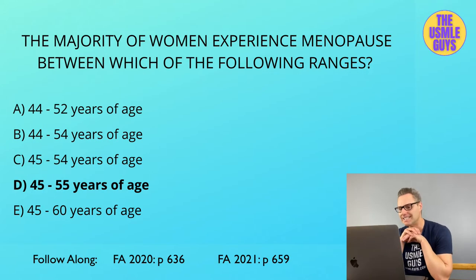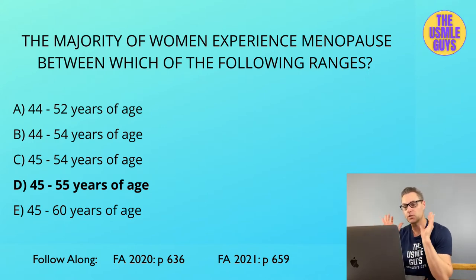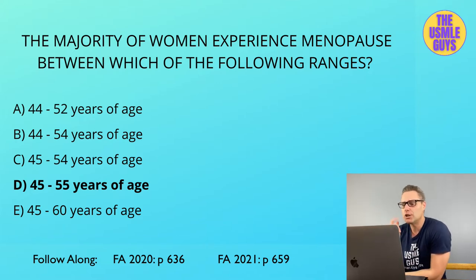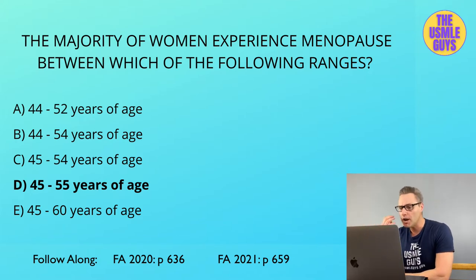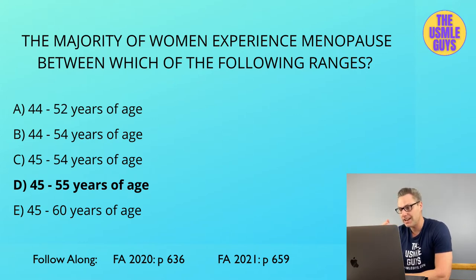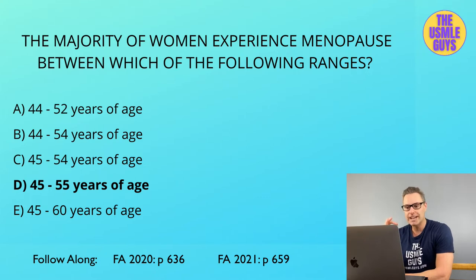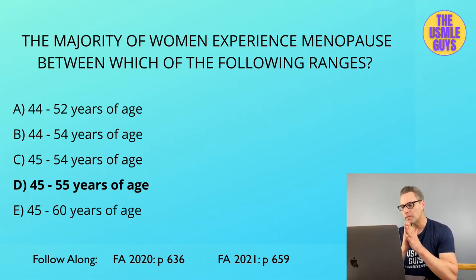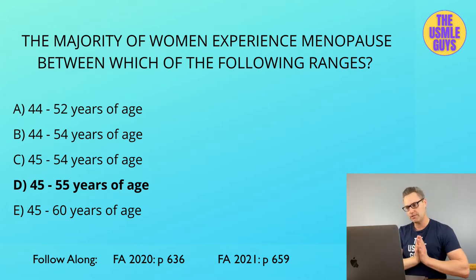The correct answer here is D, 45 to 55 years of age. So let's talk about menopause. One of the trickiest things that could confuse you in a vignette is thinking about menopause but not knowing for sure if the patient is within the age range. The average age of onset is right around 51 years of age, with most women reaching menopause between 45 and 55 years of age.